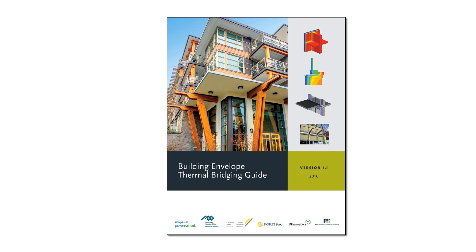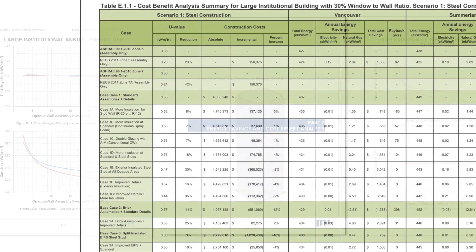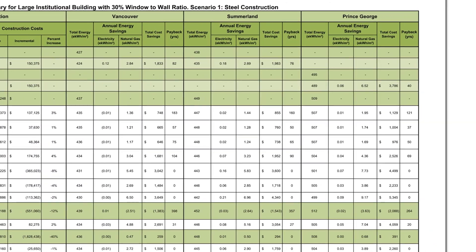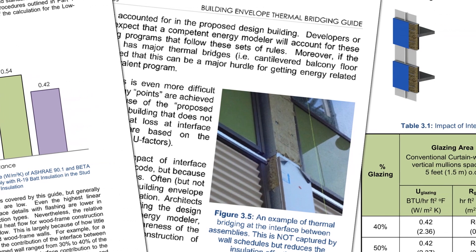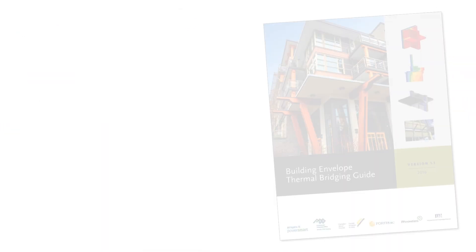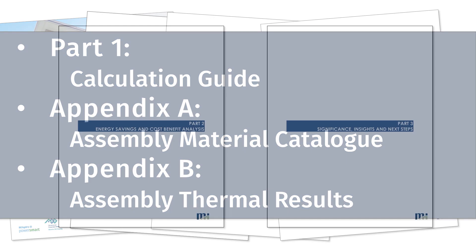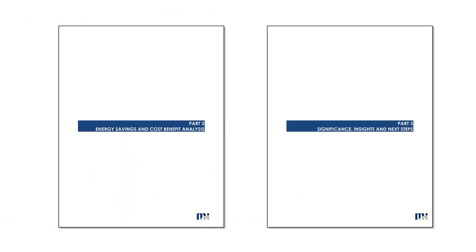The Building Envelope Thermal Bridging Guide is divided into several parts. Part 1 is the backbone of the guide and contains the calculation methodology and the catalog of details. Part 2 shows the building energy usage that is unaccounted for when interface details are not considered, through whole building energy modeling for several archetype buildings, and also provides example cost-benefit and payback periods for improving the building envelope by mitigating thermal bridging. Part 3 highlights several important takeaways in separate discussion sections, including awareness of differences in thermal bridging from different construction types, the impacts of architectural features, opaque glazing spandrels, and the importance of detailing window transitions. For this video, we will focus on the features of Part 1 and the component database in Appendix A and B.